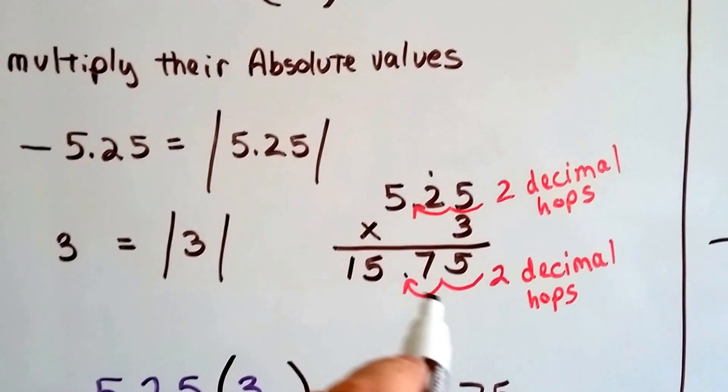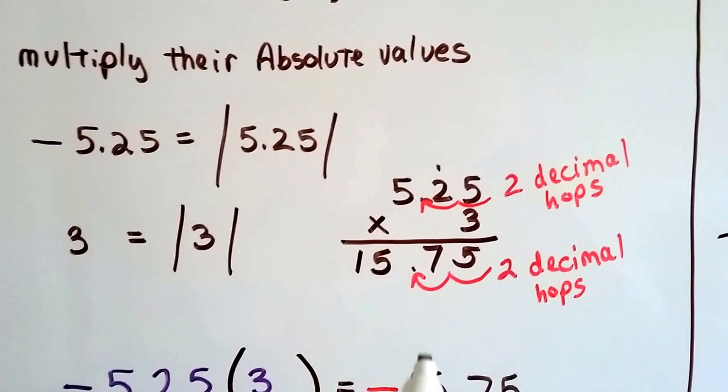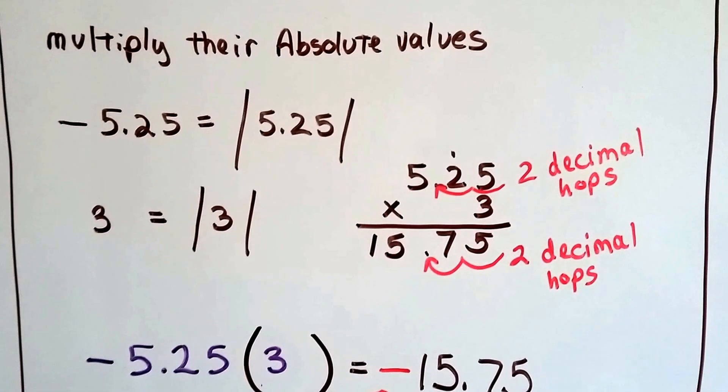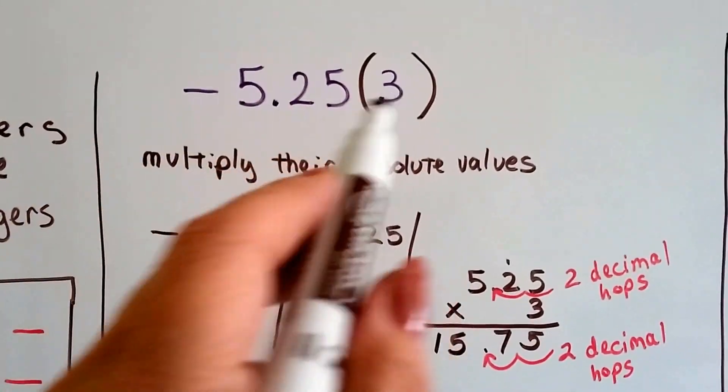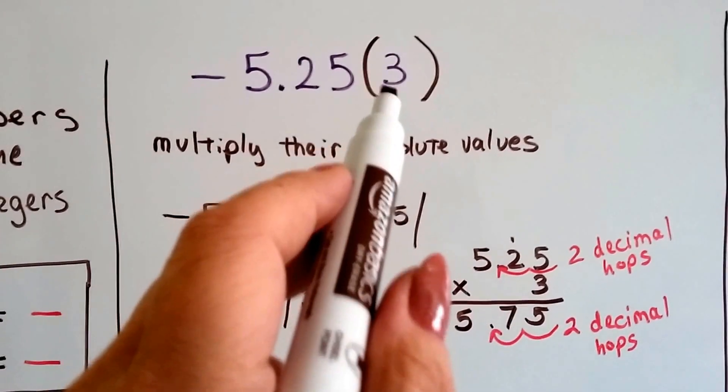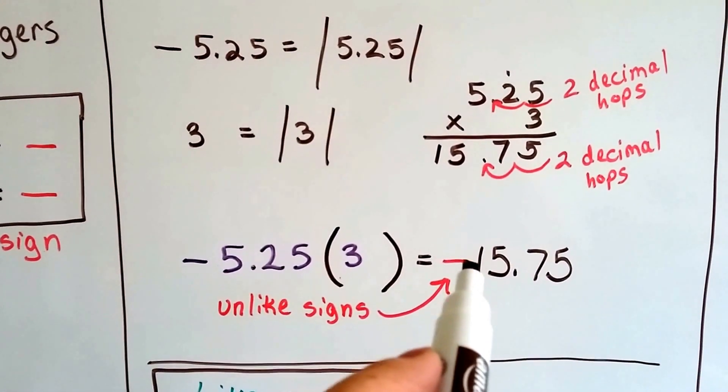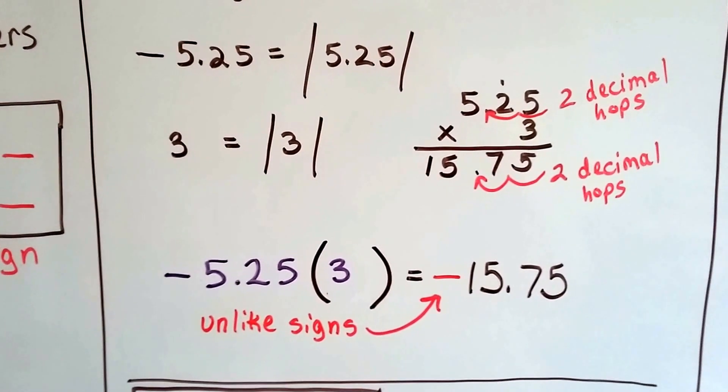And 5.25 has 2 decimal hops in its equation, doesn't it? So I'm going to put 2 decimal hops into our product. So we have 15.75 as our answer. Now is it negative or positive? Well, the original equation had a negative and a positive, so because they're unlike, it's going to be a negative 15.75.